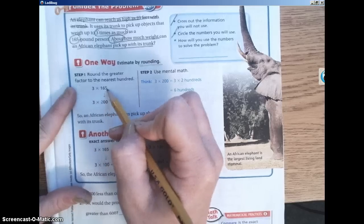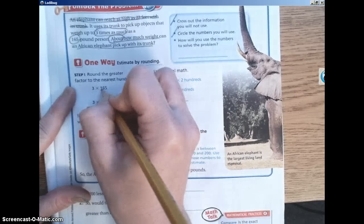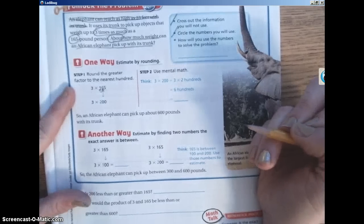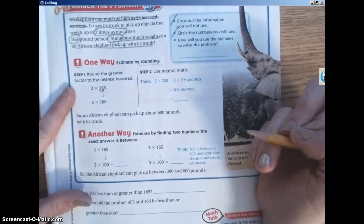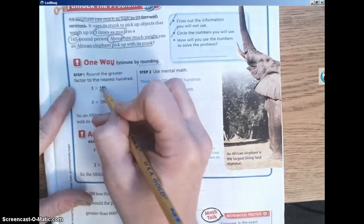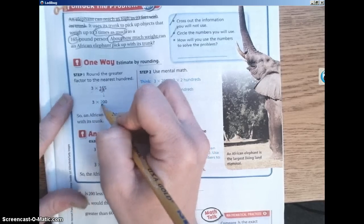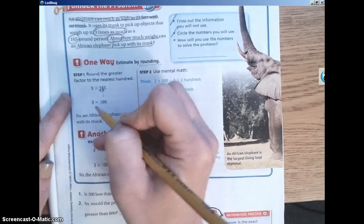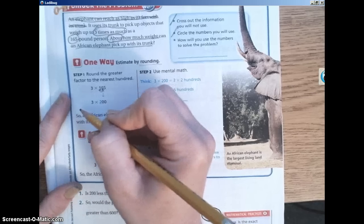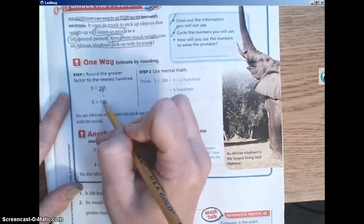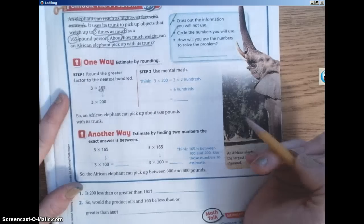We're going to look for the greater factor, which is 165. We're going to round that to the nearest hundred. So we're going to underline the hundred, look next door. Five or more, let it soar. So the six is five or more. So we're going to let the underlying digit soar to a two. Everything on the left is going to stay the same, which there's nothing in this case. And everything on the right is going to turn to a zero. So 165 is going to round up to 200. So three times 200.